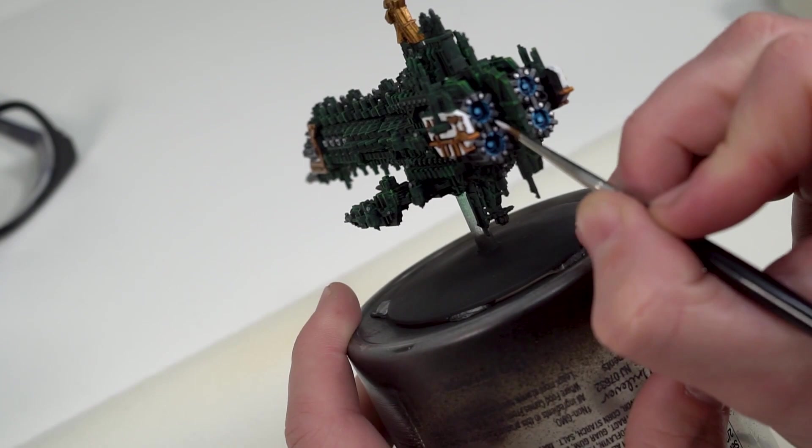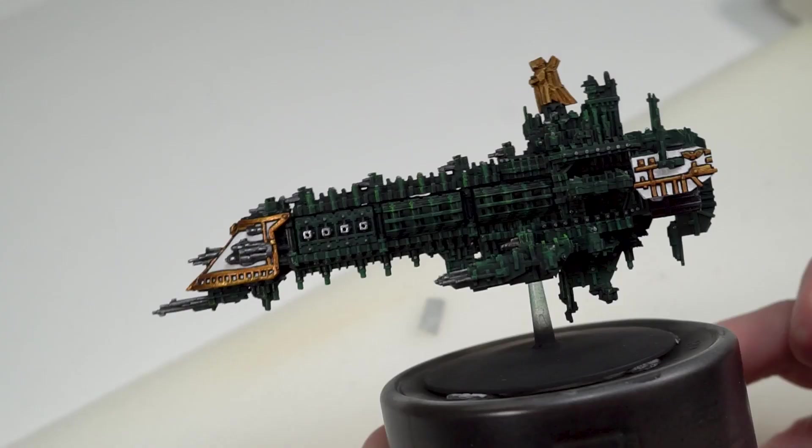And once I thought I had reached the point where the model was completed I just covered the whole model with AK Interactive Ultra Matte Varnish which is a great product. And here is the final result.